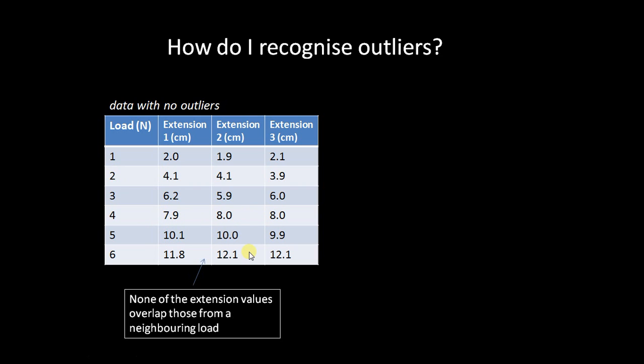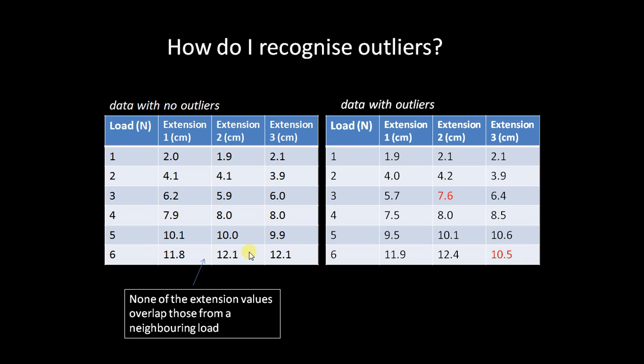But let's say another group does the same experiment and in this case if we look at the second repeat for a load of three newtons, so this value here which is highlighted in red, we can see that its value is bigger than this 7.5 centimeter extension for a higher load. So there is an overlap there between the range bars between the force of three newtons and the force of four newtons. So we are quite justified in recognizing that this value here is an outlier.